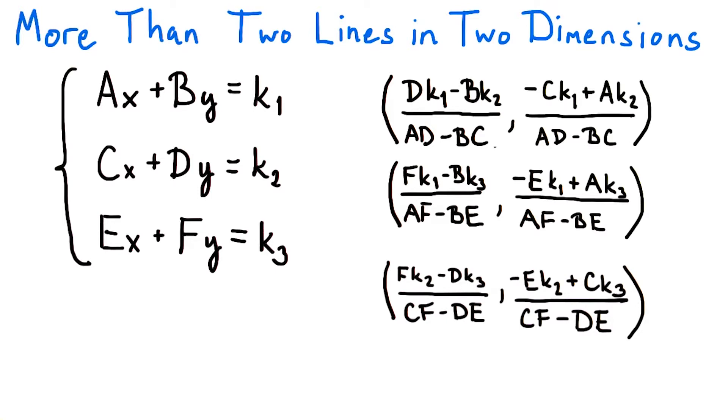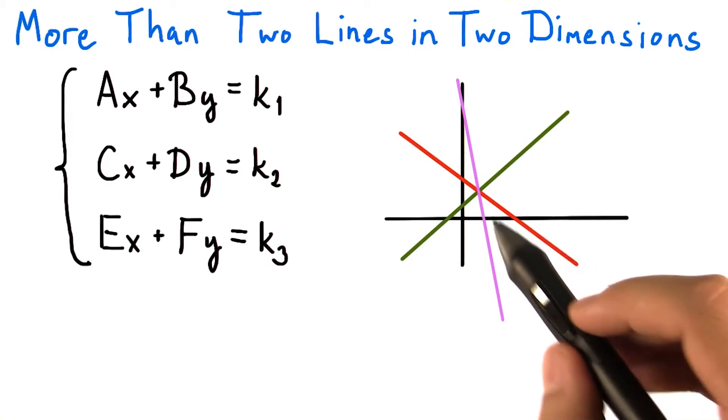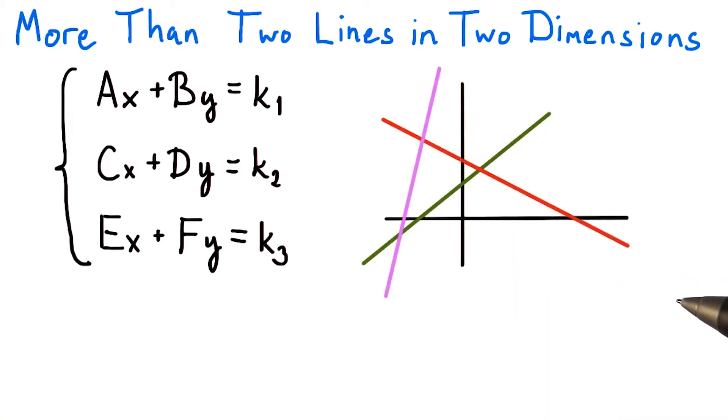However, there's no guarantee that these intersection points will all coincide. Sometimes they can, as in this set of lines that all pass through a common point. More generally, as in this set of lines, the three intersection points are all distinct.